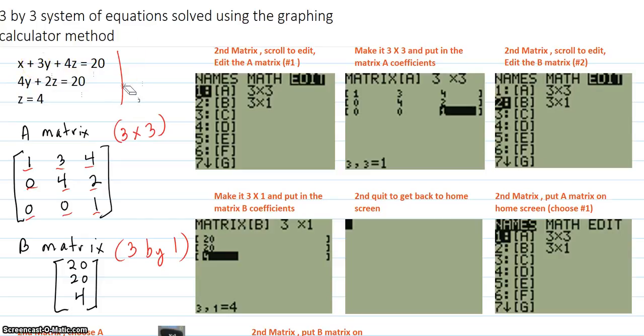So that's how you get the coefficient matrix. It's got to be x, y, z. And if there's no variable, that gets a 0. So there's the A matrix that we're going to put in the calculator. And the B matrix is the answers vector, 20, 20, and 4, right there. So here's how we do it.